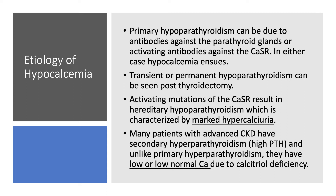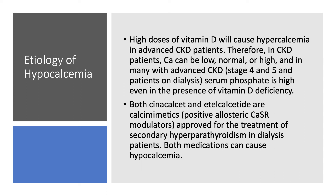In secondary hyperparathyroidism, you need something to cause it — in this case, it's advanced CKD. High doses of vitamin D will cause hypercalcemia in patients with advanced CKD, so calcium can be low, normal, or high depending on the circumstances. Many patients with advanced CKD, stage 4 or 5, or patients on dialysis, have high serum phosphate even with vitamin D deficiency, because the kidneys cannot excrete phosphate.